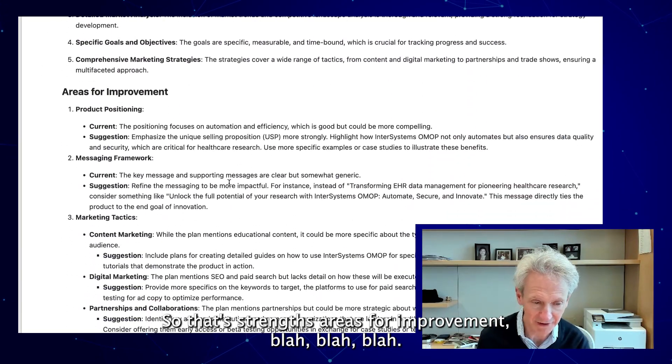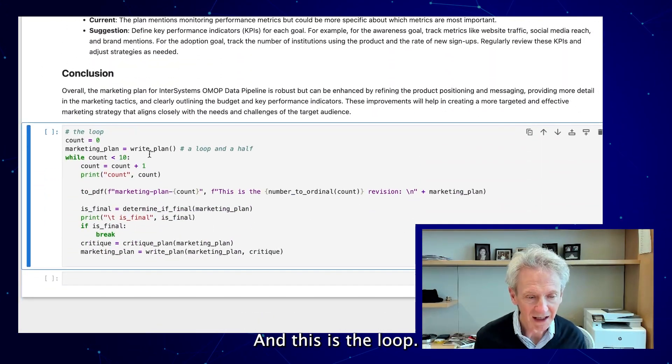And this is the critiquing agent, the second one the way I described it. The critiquing agent is reading the plan and providing a critique of it. So that's a strength, areas for improvement, blah blah blah. And this is the loop.